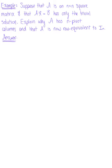Suppose that A is an n by n square matrix and that matrix A times vector x equals the zero vector has only the trivial solution. We are asked to explain why matrix A has n pivot columns and why matrix A is now row equivalent to the n by n identity matrix.